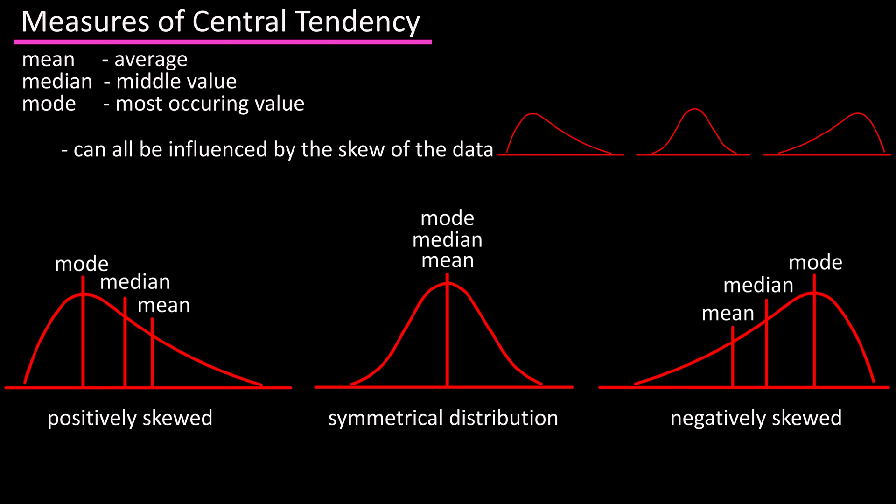And in a negatively skewed distribution, the lower values will pull the mean downwards. The median will again be near the center of the graph, higher than the mean, and the mode will be the highest of the three, near the peak of the graph.